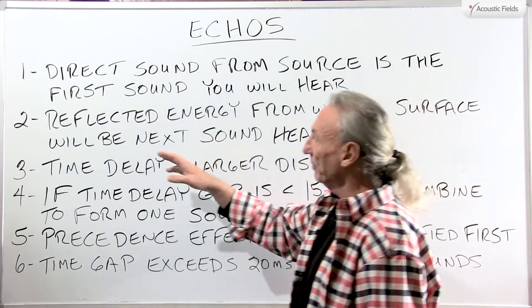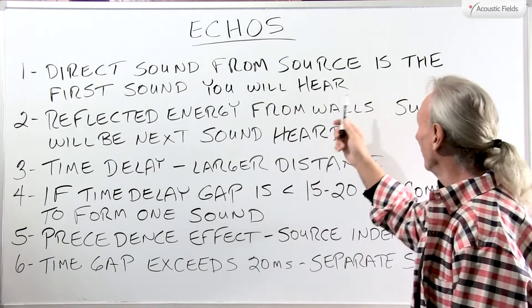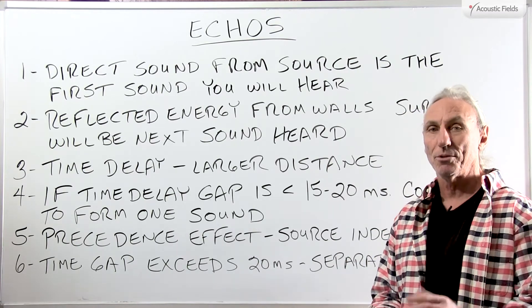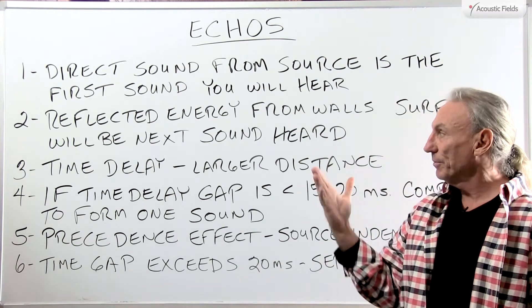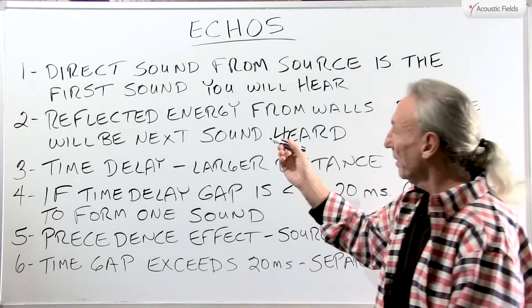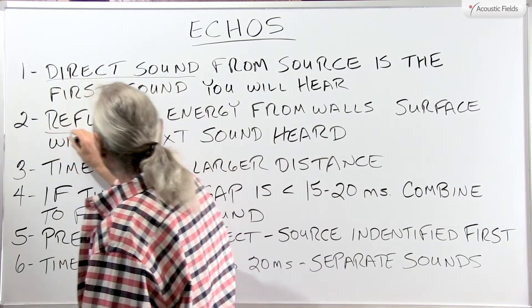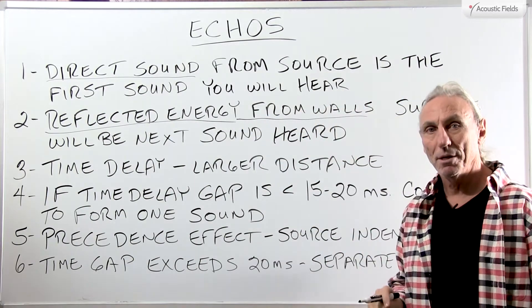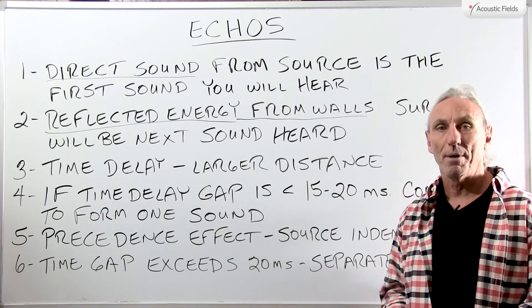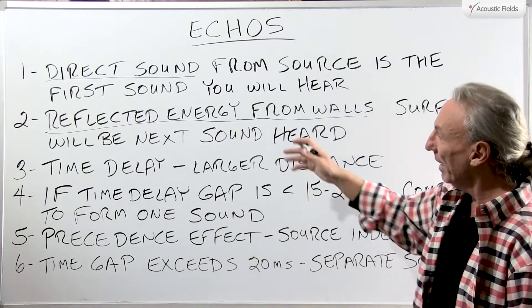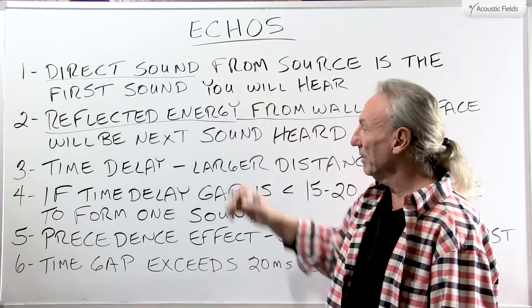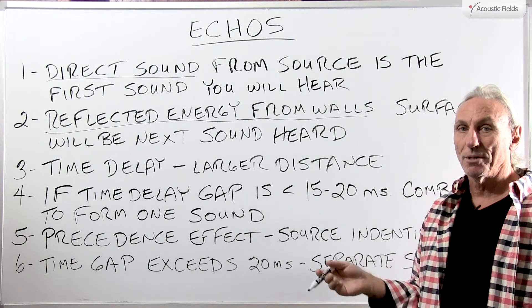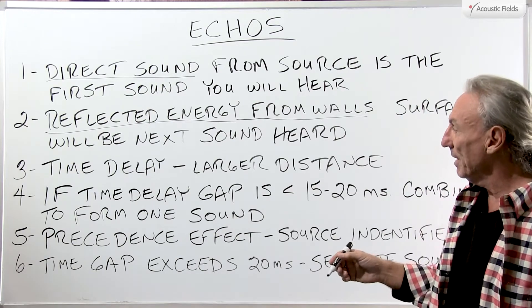Direct sound from a source is the first sound you will hear. If I'm speaking to you and you're standing in front of me, that's the first sound you're going to hear. We have this direct sound, and then we have the reflected energy from surfaces. Most of us communicate in buildings and rooms that have boundary surfaces. The reflected is always the second sound; direct is always the first — we have to keep that in mind.